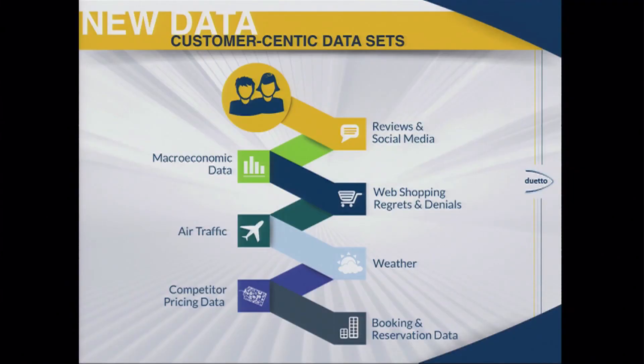Another very interesting data source, especially for cities served by a big airport, is air traffic. In a city like Vegas, where you have air traffic but also car traffic from California, whatever happens at McCarran has a big impact on the rates being charged and the type of customers coming in. Weather — especially for ski resorts and beach resorts — is a no-brainer. And of course competitor pricing data and booking and reservation data are what everybody is used to. How do we capture, store, and incorporate all this data into a single repository that makes sense for all departments to deploy their revenue strategy?